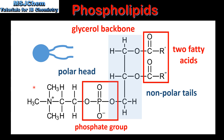Phospholipids are characterized by having a polar head, which is this part of the molecule here, and two non-polar tails, which are the two fatty acids. The structure of a phospholipid can be shown like this, with the round part being the polar head and the two fatty acids being the non-polar tails.